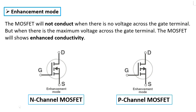For the n-channel MOSFET, the arrow is towards the gate from source to gate, and for the p-channel MOSFET the arrow goes from gate to source. The symbol for the enhancement mode is different — as you can see in the gate, there are dashed or cut lines, indicating enhancement mode.